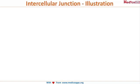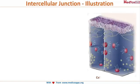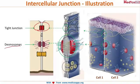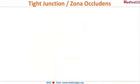Here is a quick illustration of how the various junctions look. This is how a tight junction appears, these are the desmosomes, and this is a gap junction.